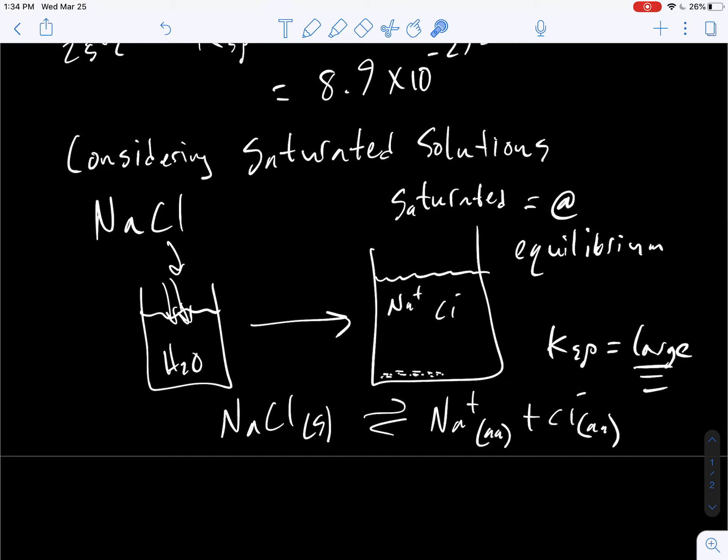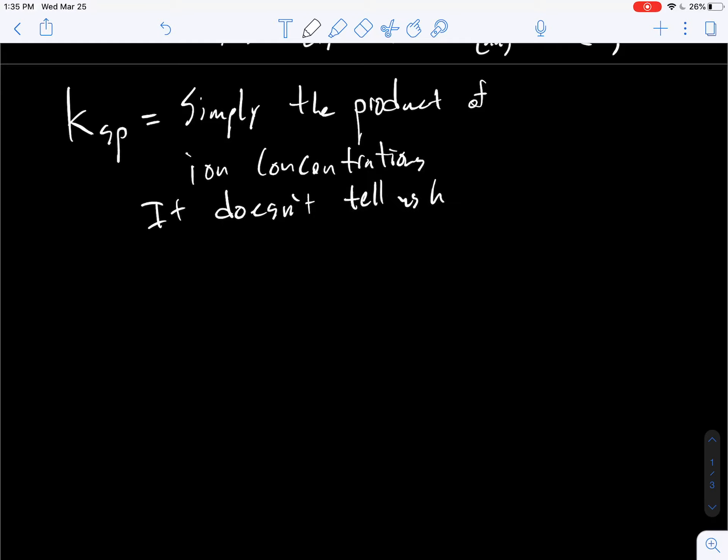So let's look at the Ksp value of something else here. I'll just talk about the Ksp value for a second. I'm going to scroll down to a new page. So remember, what is Ksp? It's simply the product of ion concentrations to the coefficients. It doesn't actually tell us how much of that substance dissolves in water.